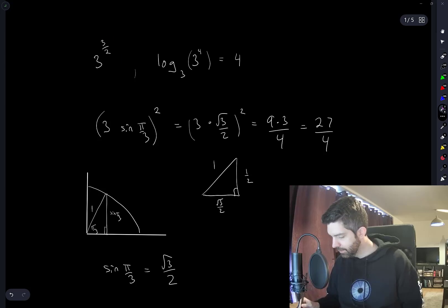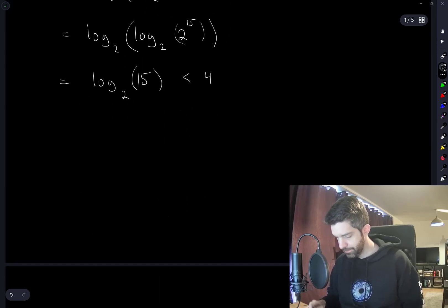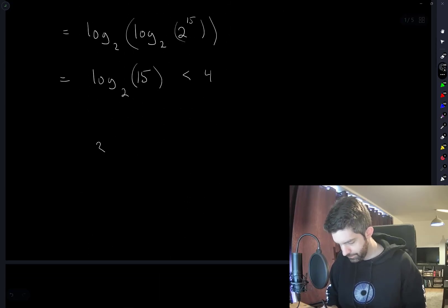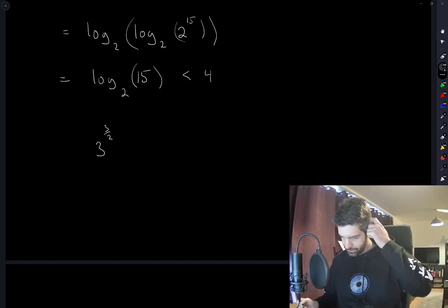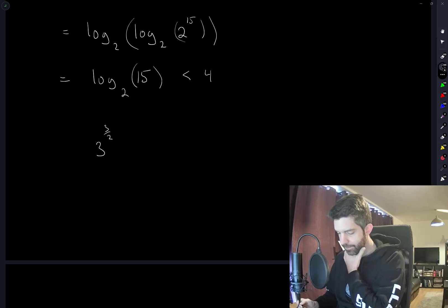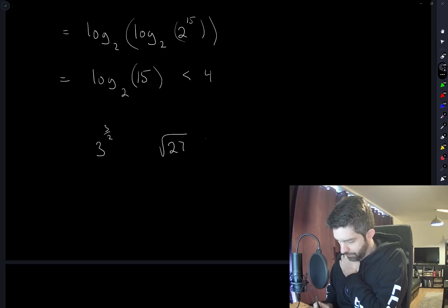So 3 to the power of 3 over 2. This is root of 27. But that's greater than 4, isn't it?